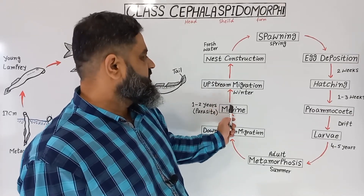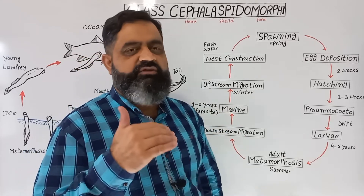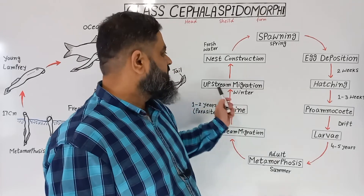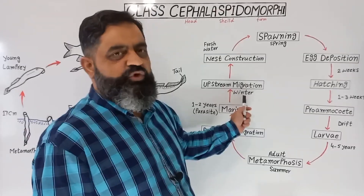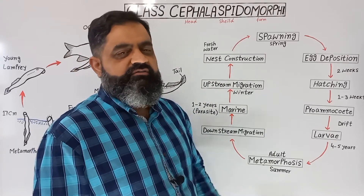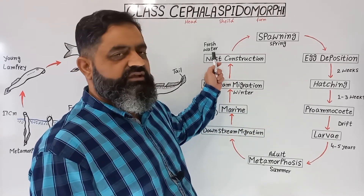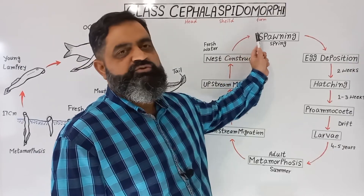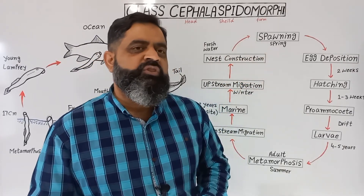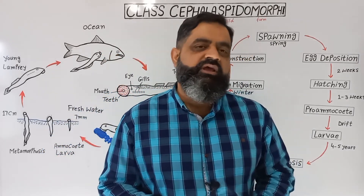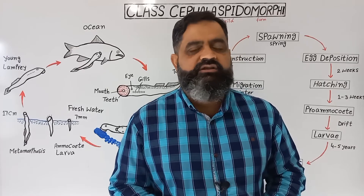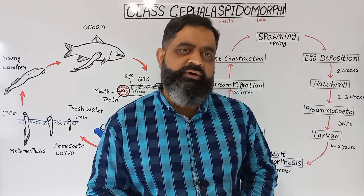After spending one to two years in marine water, upstream migration usually starts in winter, where they reach the fresh water of the river. They build a nest and undergo spawning, which is also the reproduction stage, and in this way their life cycle is completed. I hope it makes sense — that's all for today, and I'll see you in the next lecture. Until then, bye.